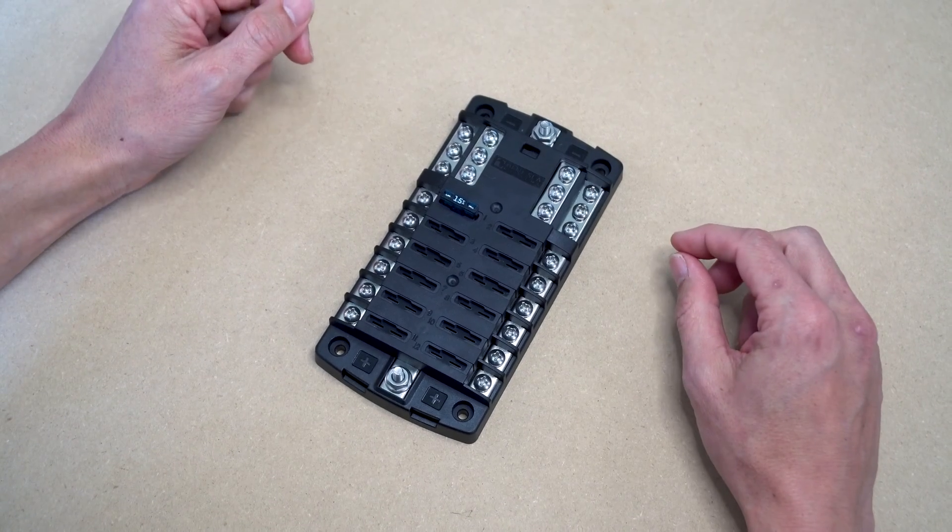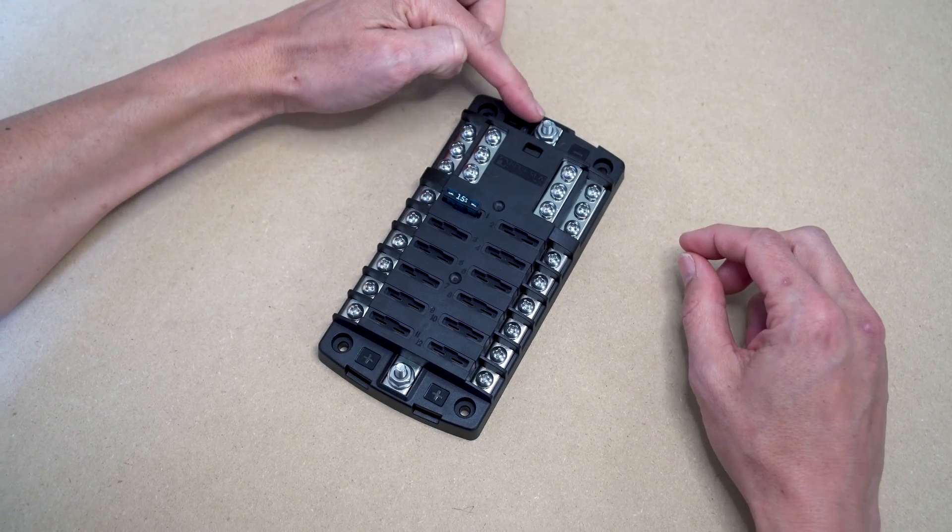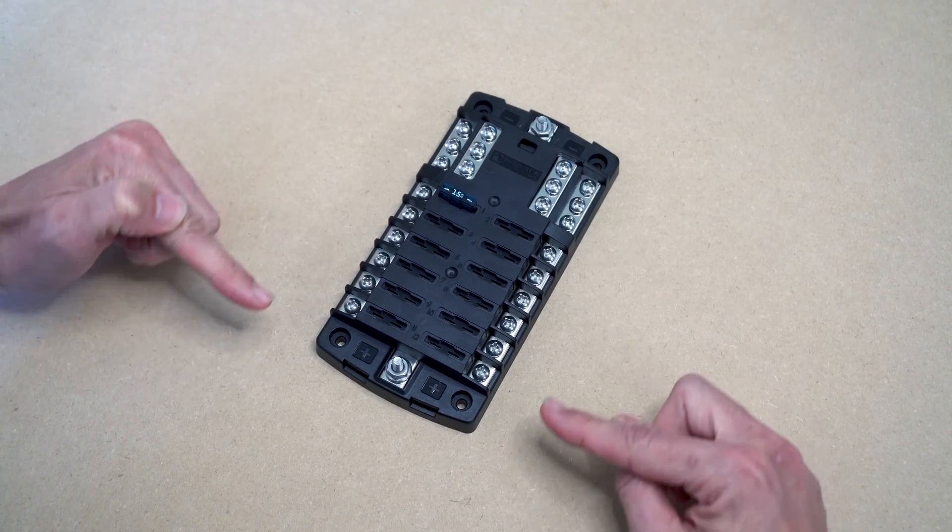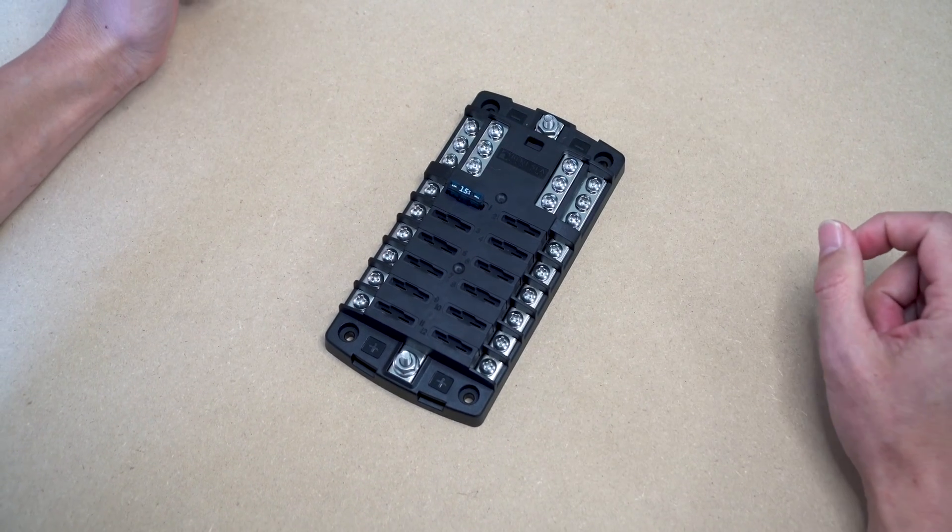When you remove this cover, you can see the main positive and negative terminal posts that connect to your batteries. The panel as a whole can accept a max current of 100 amps.